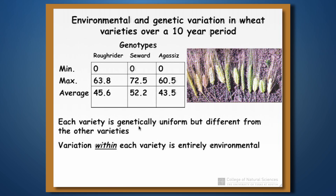If you want to know what variation is purely environmental, look within a variety. These varieties were planted over a 10-year period, and from year to year there was variation in the environment — rainfall, nutrients, temperatures. For Roughrider, under the worst conditions it produced no harvestable wheat at all, and under the best conditions it produced up to 63 kilos per acre. This variation is purely due to the environment, because every year Roughrider had exactly the same genes — so all differences must be due to environmental changes from year to year.